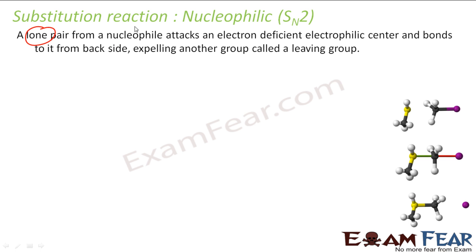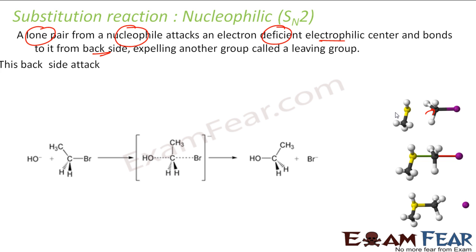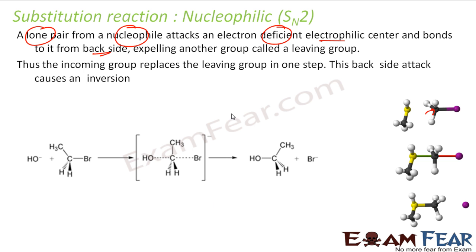The lone pair from the nucleophile attacks the electron-deficient electrophilic center from the back side. For this to happen, there has to be enough space from the back side. If there is not enough space, the reaction would not happen. This happens in one step only.